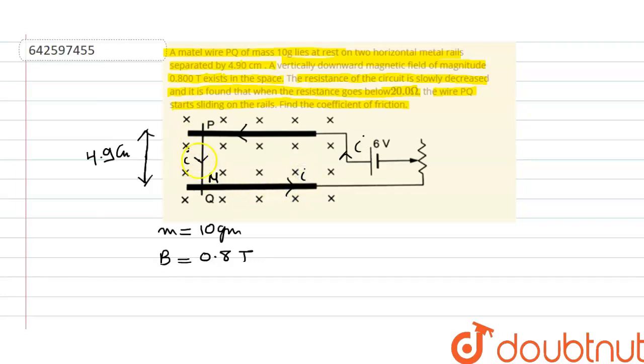So we know that as wire PQ is perpendicular to the magnetic field, magnetic force will act on this wire due to the presence of magnetic field. And this magnetic force is given by F = I L × B, where L is the length of PQ which is given to us.